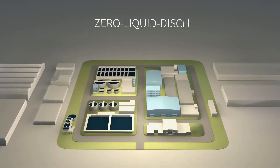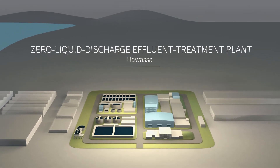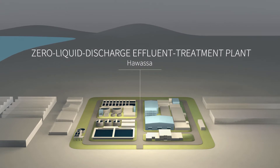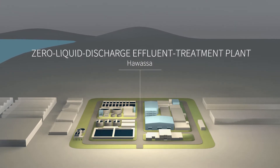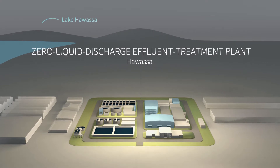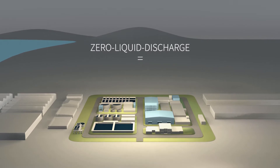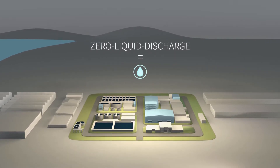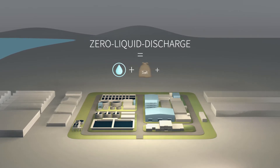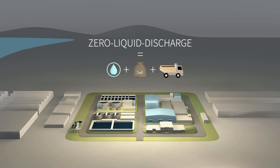Welcome to the Zero Liquid Discharge Effluent Treatment Plant in Hawassa, Ethiopia. This plant treats wastewater from textile facilities at Hawassa Industrial Park. It is important for the region because it protects Lake Hawassa. It is an advanced zero liquid discharge plant, which means it produces nothing but clean water for reuse in the textile facilities and solid materials, namely salt and sludge. No wastewater is discharged into the lake.